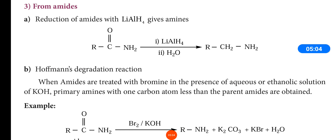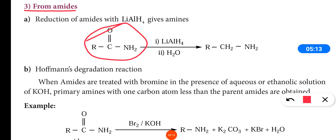The next method is the preparation of amines from amides. Amides are organic compounds having the general formula R-CO-NH2, where a carbonyl group is present. When amides are reduced with lithium aluminium hydride, they give amines.